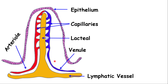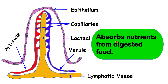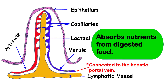The lacteal is connected to the lymphatic vessel, which connects to the lymphatic system. The villus is very important in absorbing digested nutrients from food. The end of the venule is connected to the hepatic portal vein, which will take food substances — specifically amino acids and glucose — to the liver.